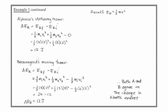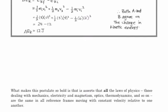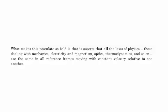Both Alphonse and Beauregard agree on the change in kinetic energy. We could do the same for other simple physics laws — like momentum — and we would see that the laws of physics have to agree. What makes this postulate so bold is that it says all the laws of physics are the same in all reference frames that have a constant velocity relative to one another.